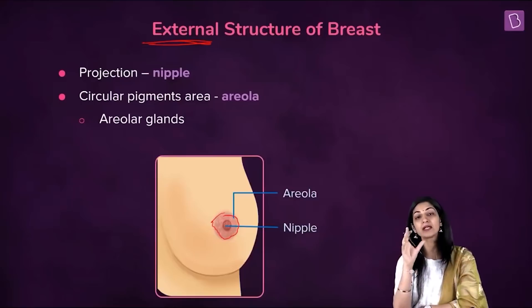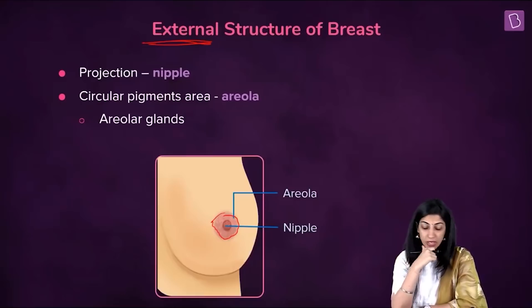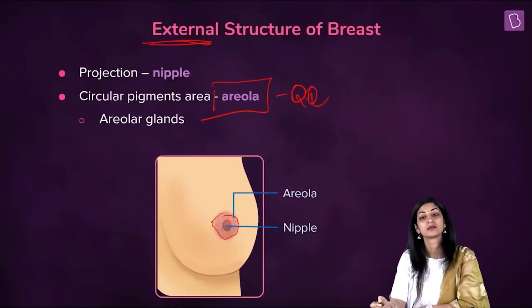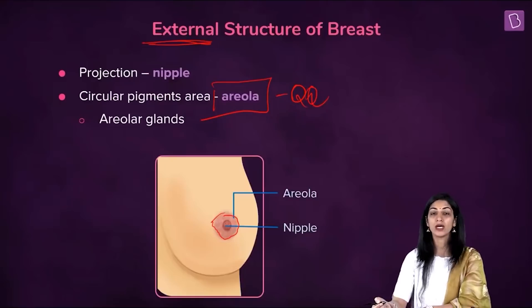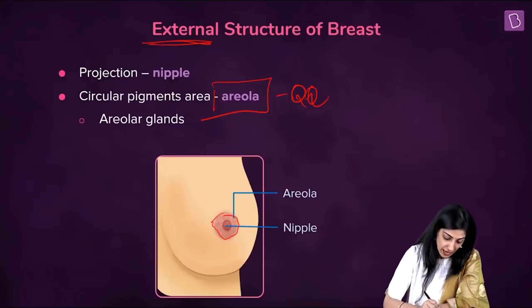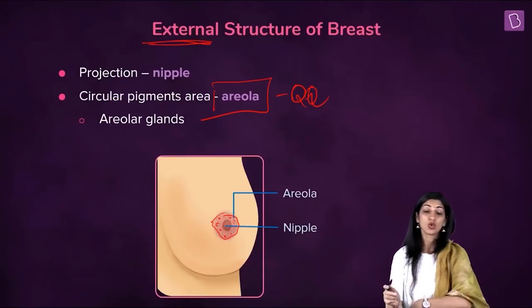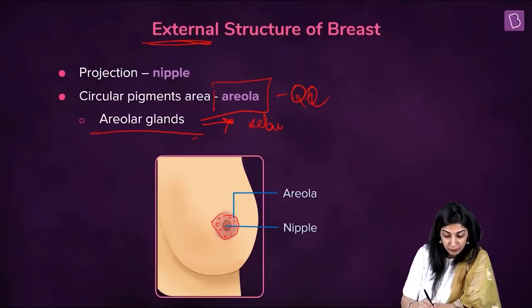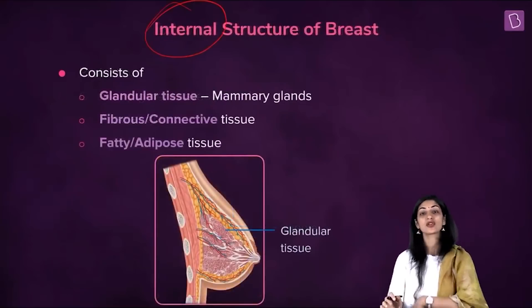Around the nipple there is a pigmented portion, pink to dark brown in color, which is called the areola. The pigmented area surrounding the nipple is called the areola. If you look closely, the areola has very small, tiny raised projections — those are areola glands, which secrete sebum, a little oily secretion.